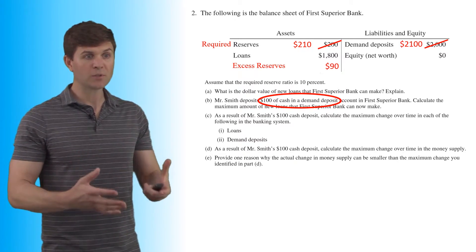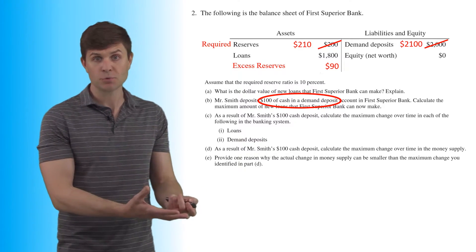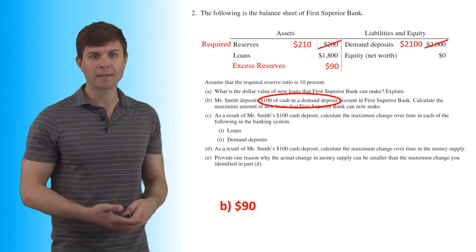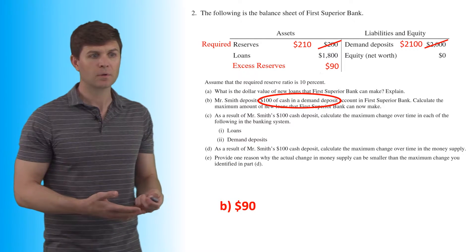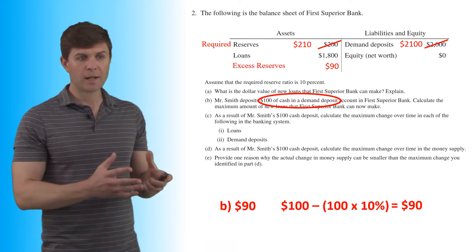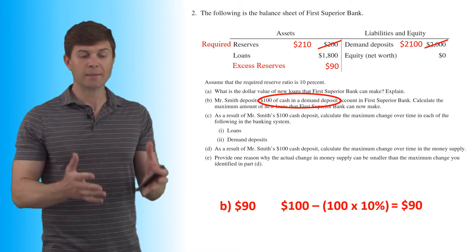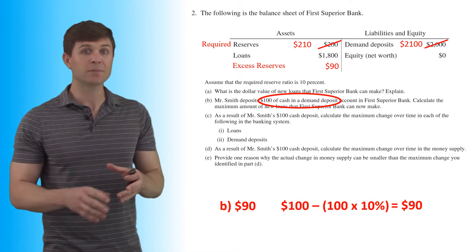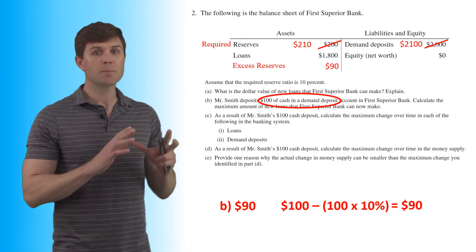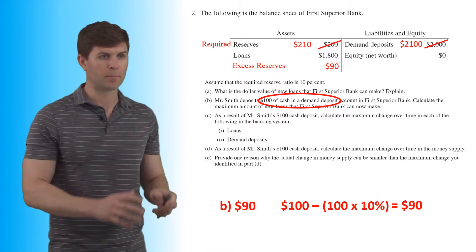So the maximum amount First Superior Bank can now loan out is $90. That's the $100 deposit minus the 10% reserve requirement. Since the question says 'calculate,' you'll want to show that math to show how you got that number.